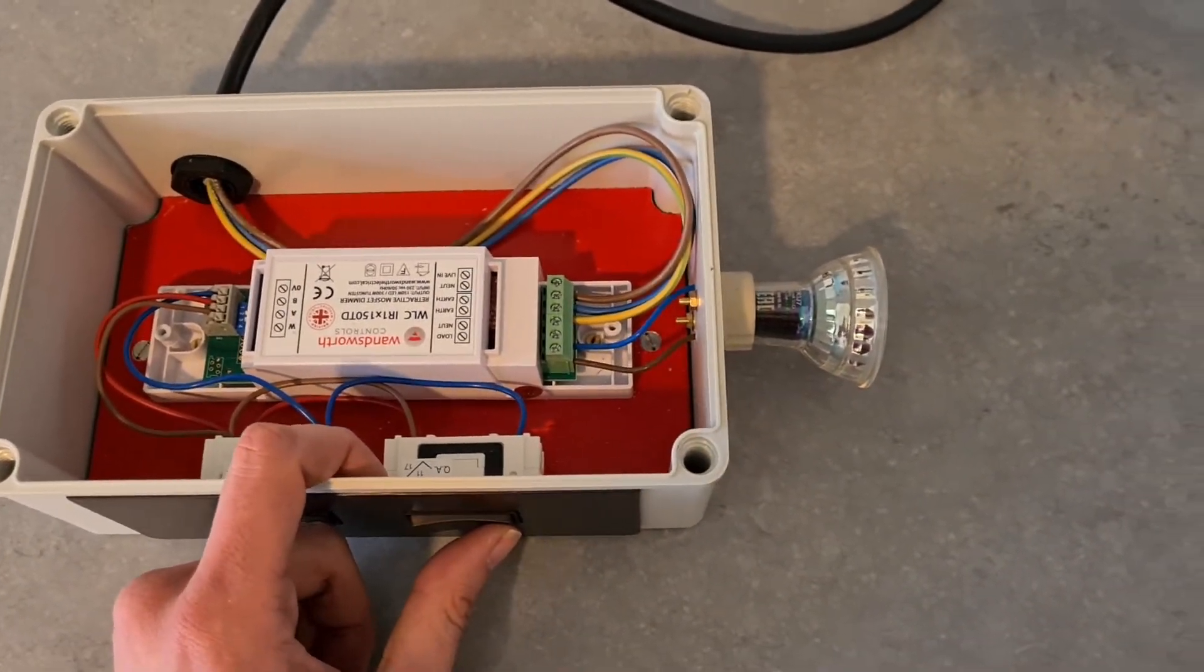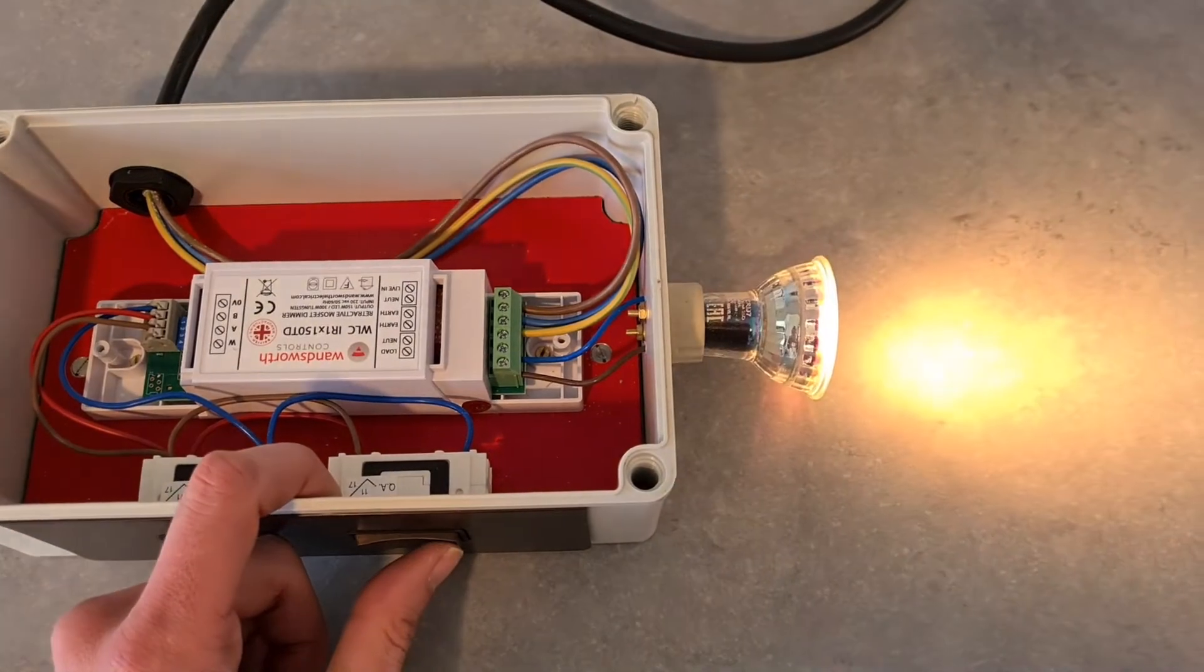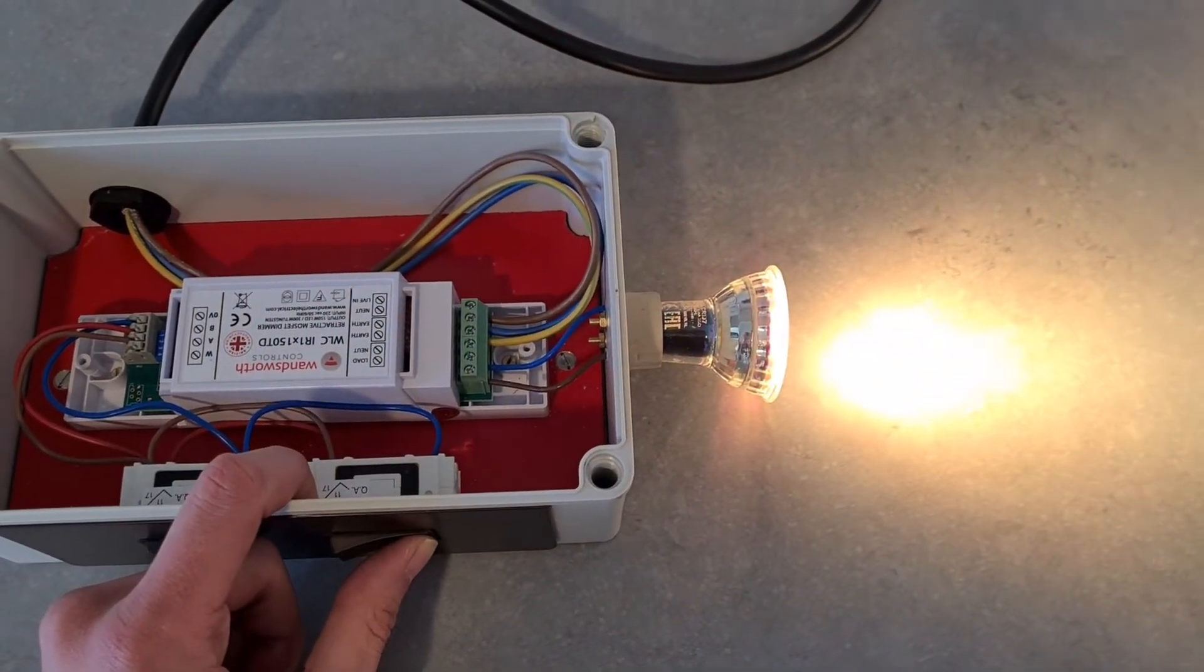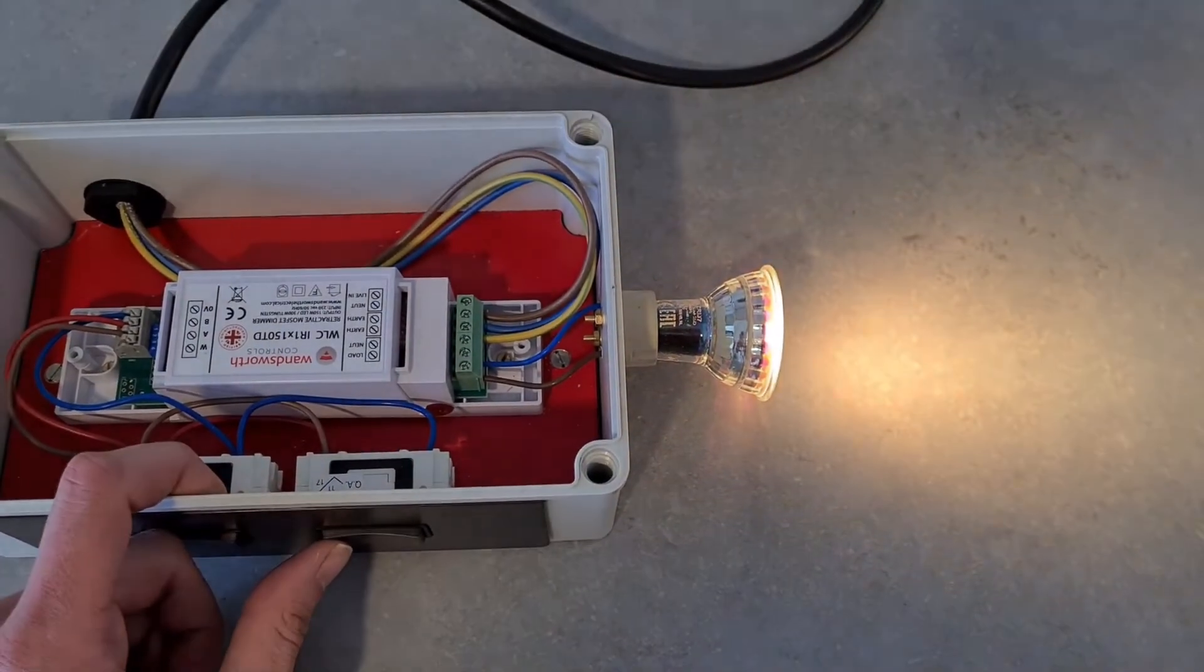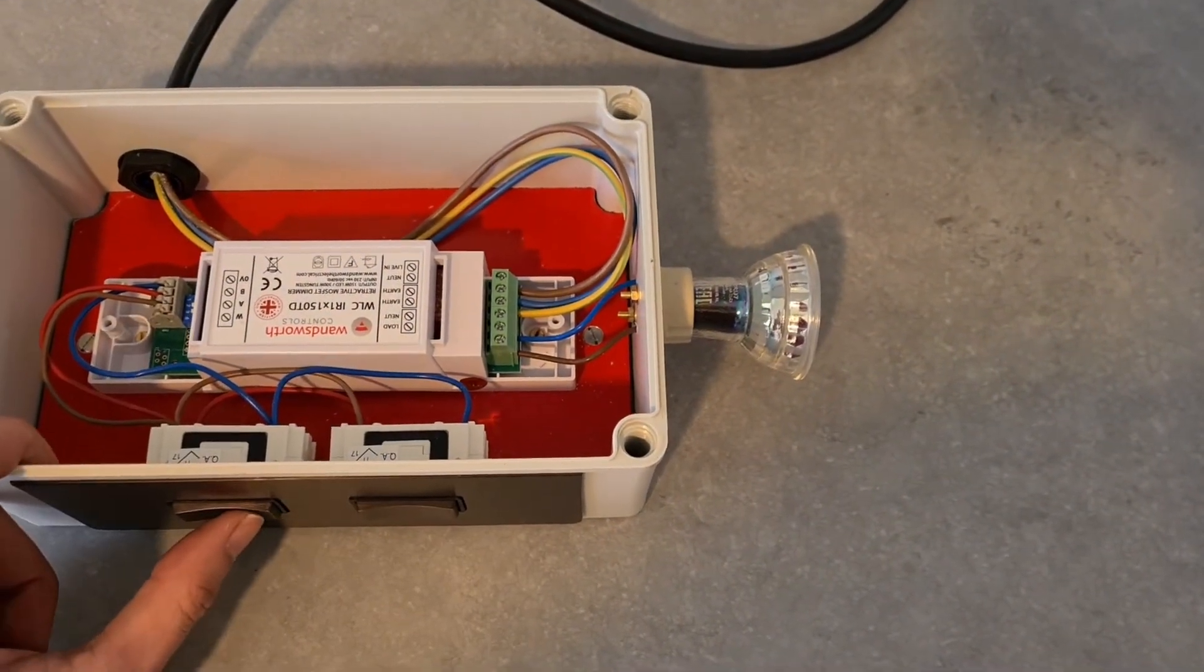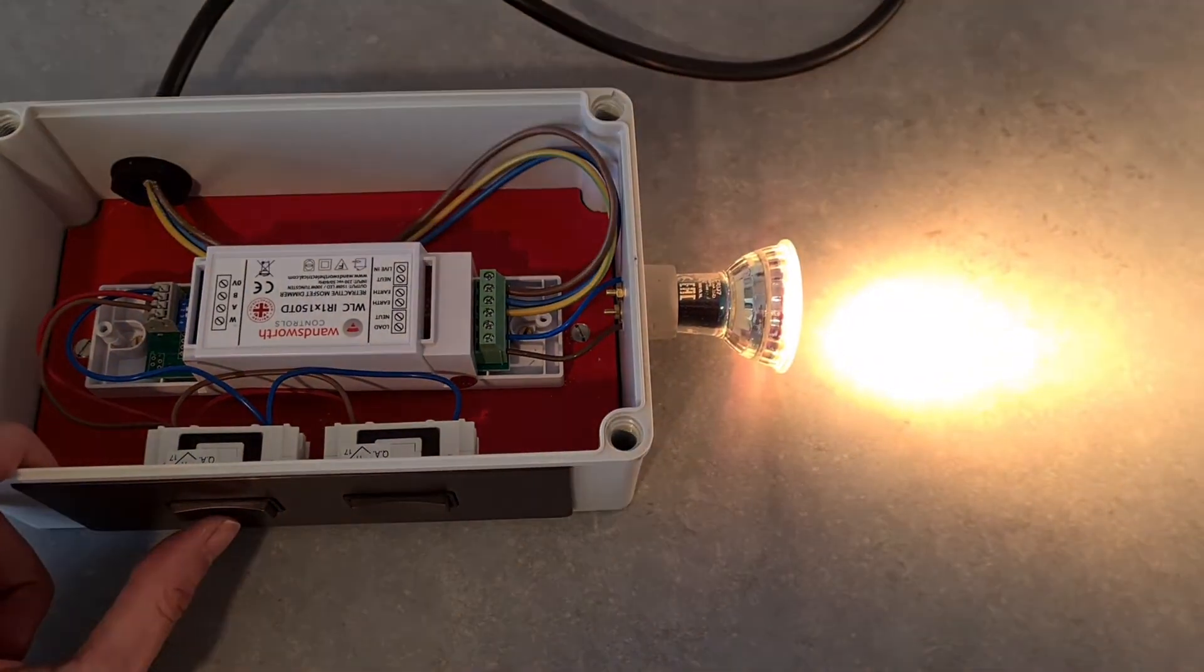So slightly differently from before, my up press is now an on and a dim up and my down press is an off again, same as before from multiple locations.